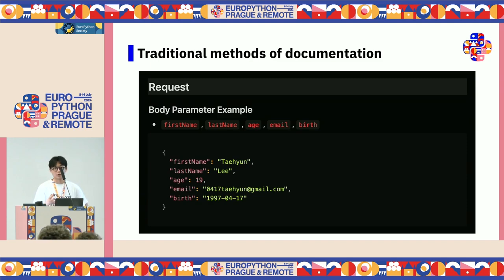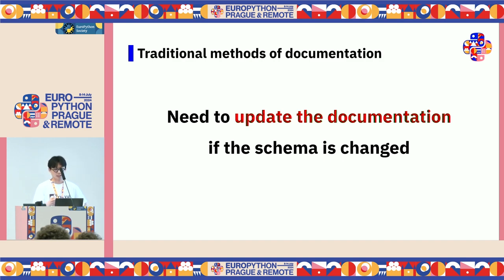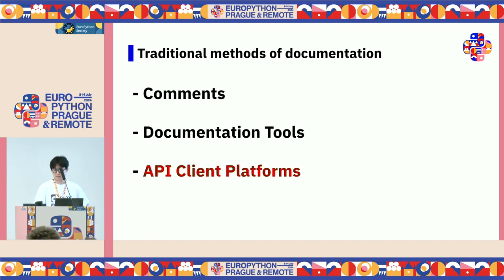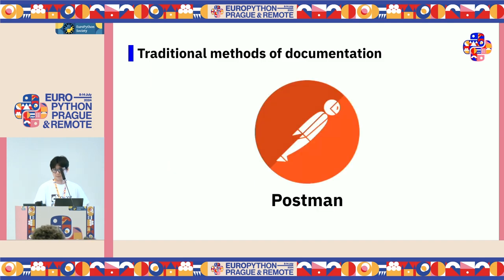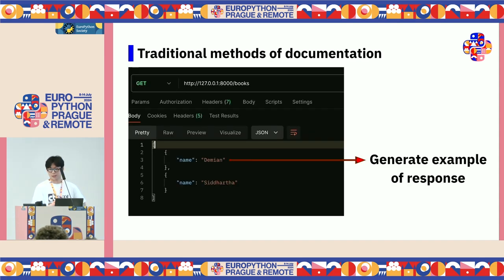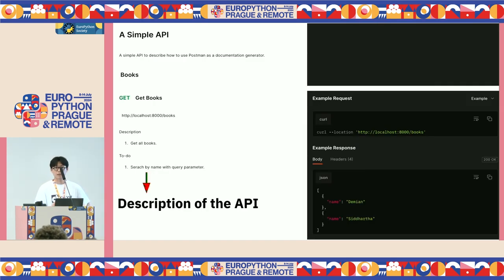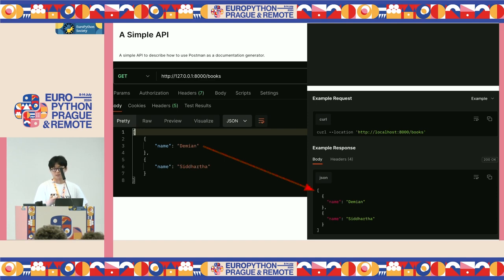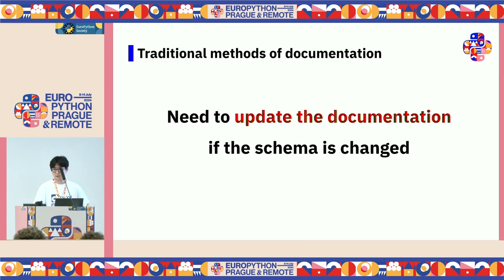There are lots of documentation tools such as Notion and Google Docs. You can create documents using Notion with code blocks, descriptions, or headings. We can also manage the history, revision, or version of the documents. But we still need to update the documentation when the schema is changed, just like with comments. Postman is a well-known API client platform. You can generate documents through Postman using the responses of the APIs and add descriptions. But we still need to update the documents in Postman if the schema is changed.